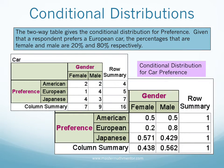The two-way table can also be viewed as a conditional percentage distribution. We calculate the percentage of gender given the condition of car preference. Given that someone prefers an American car, two out of four, or 50 percent, are male and 50 percent are female. Given that someone prefers a European car, one out of five, or 20 percent, are male and 80 percent are female. And given that someone prefers a Japanese car, four out of seven, or 57 percent, are male and 43 percent are female.